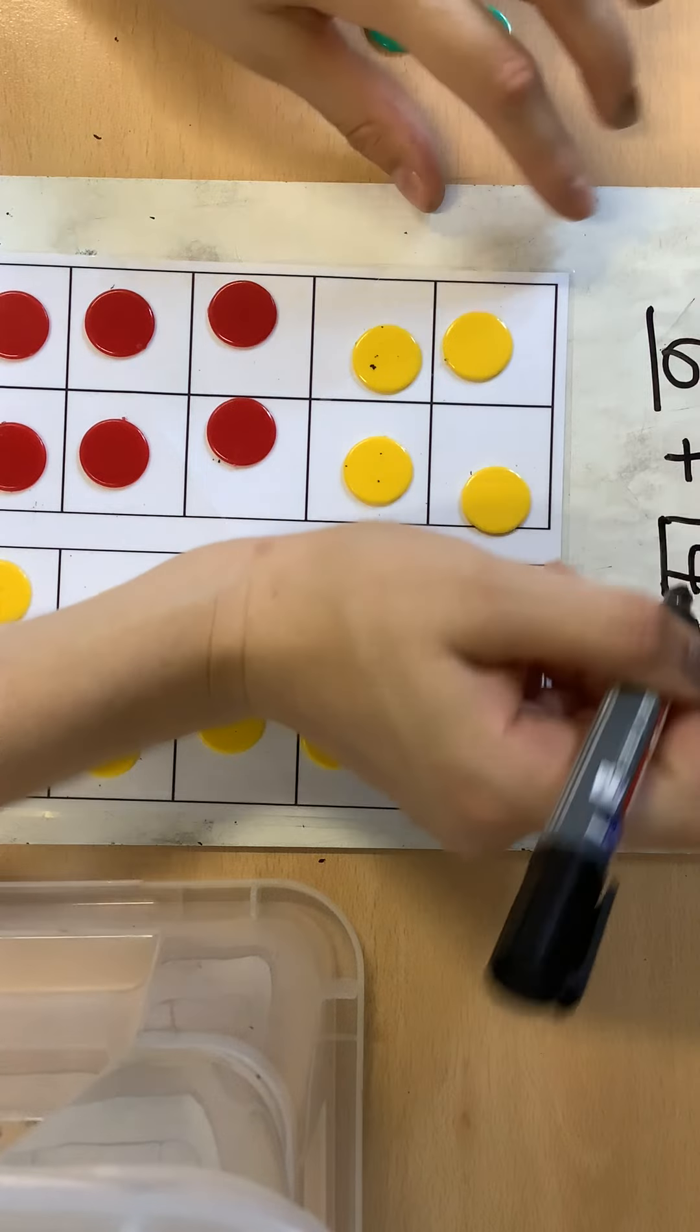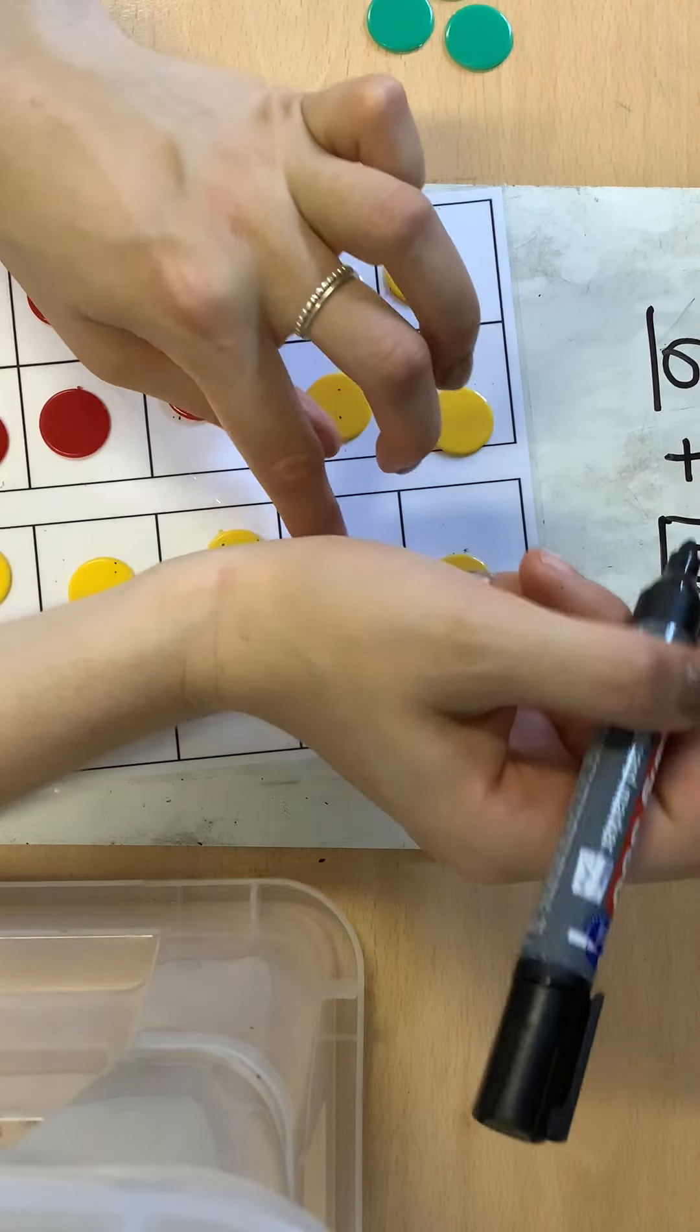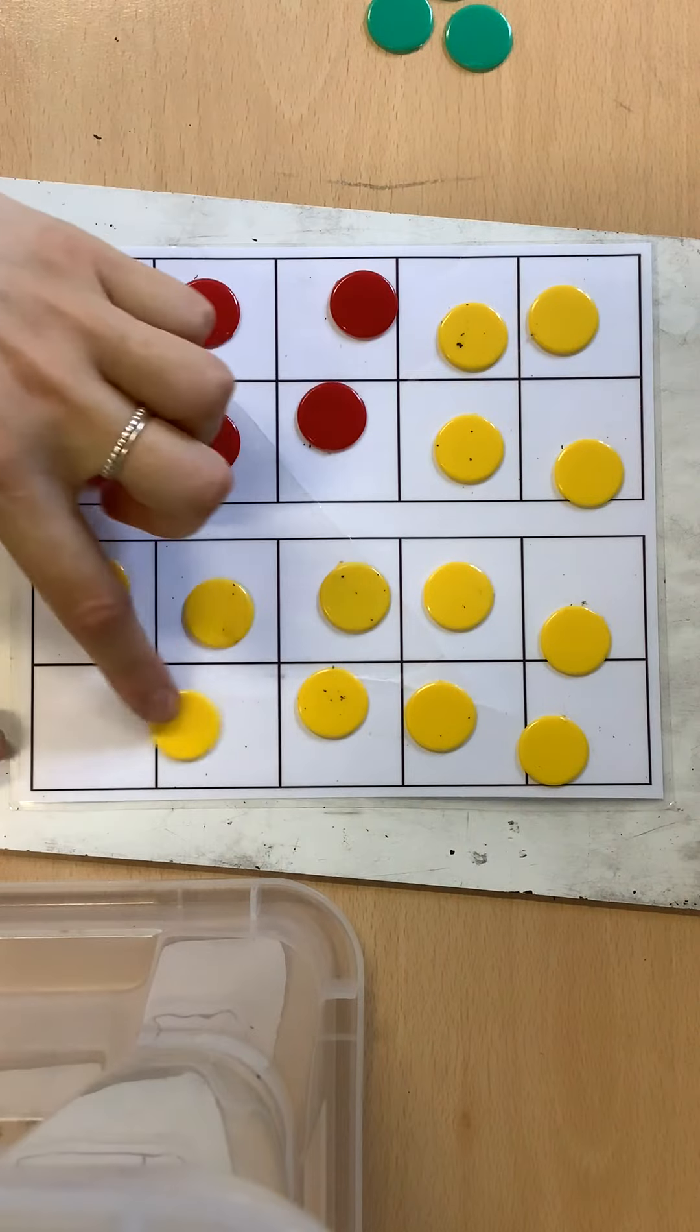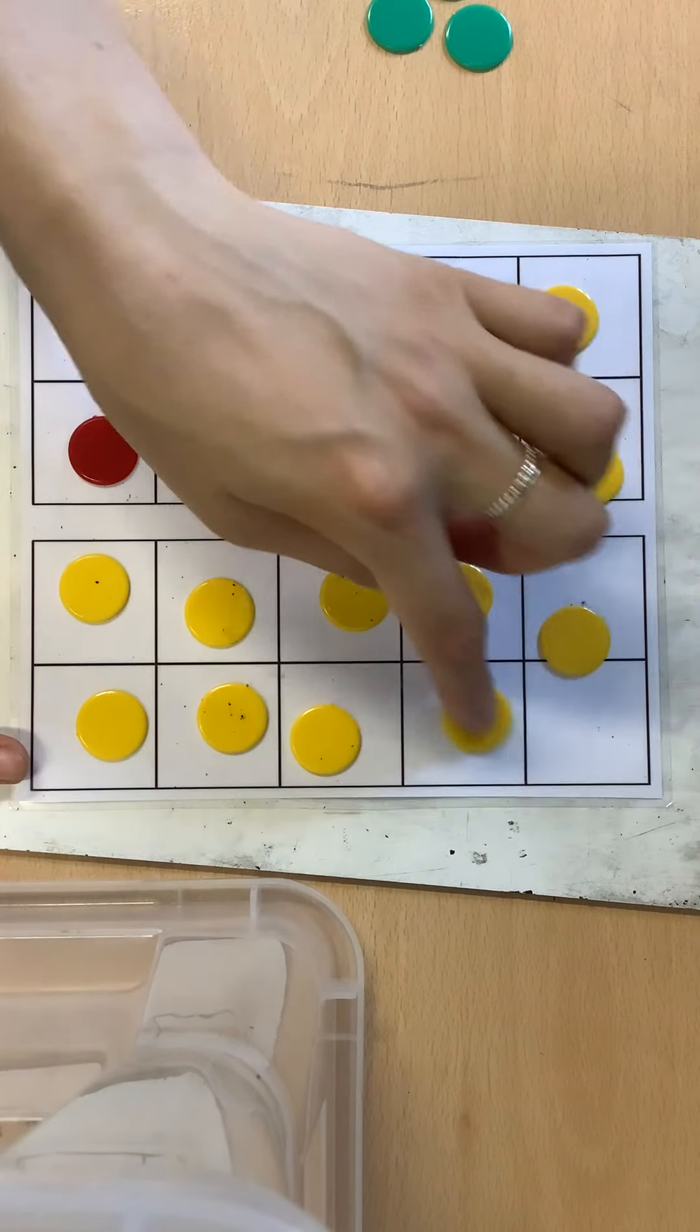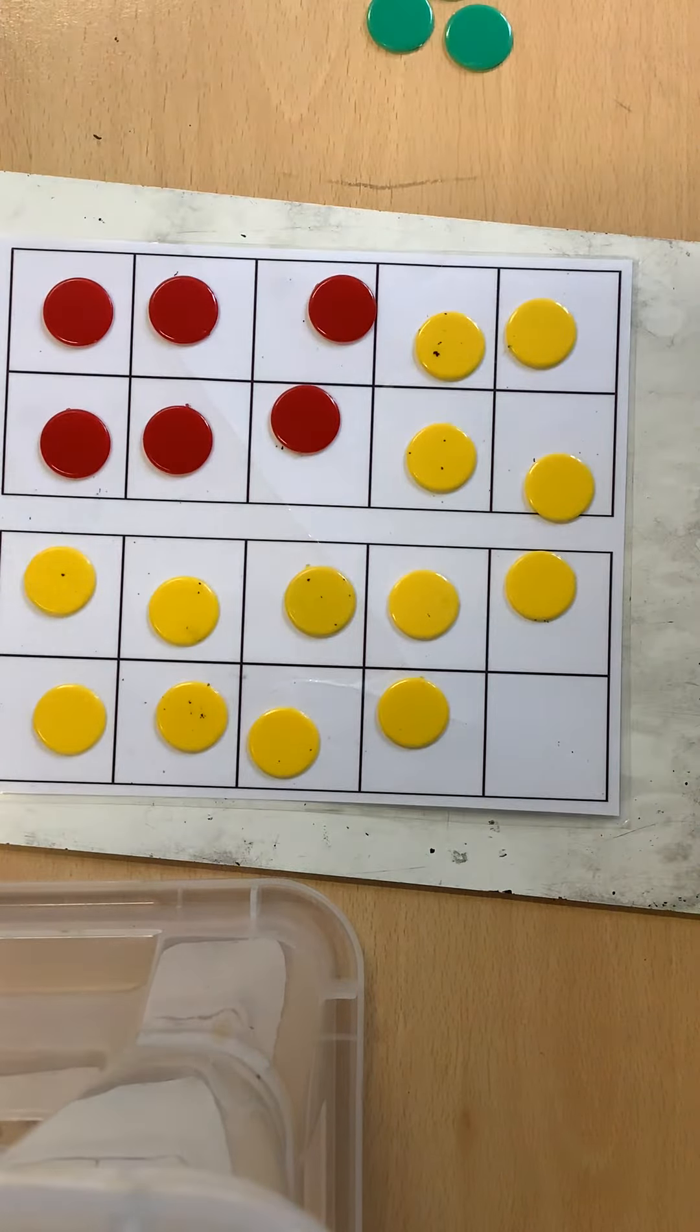So six and 14 make 20. That's a number bond. Six and 14, 20.